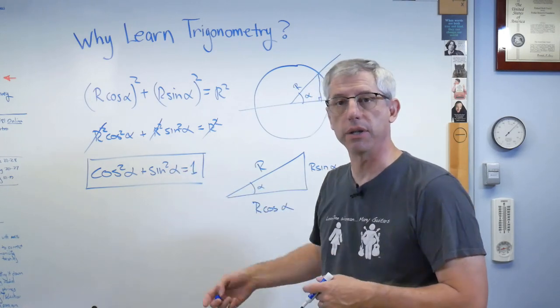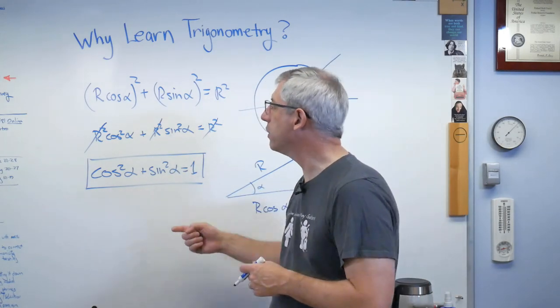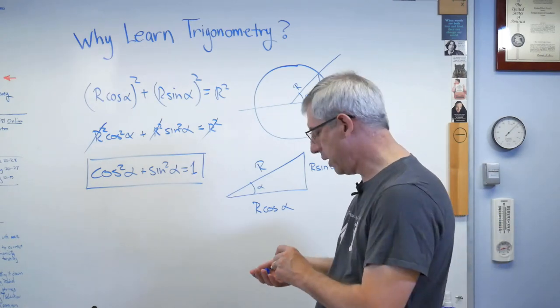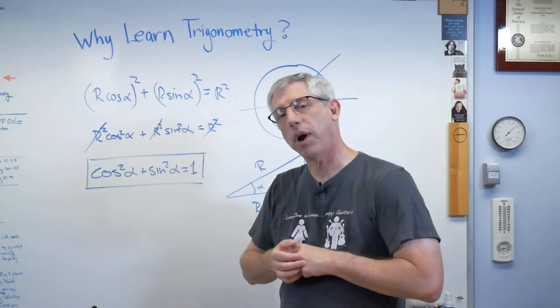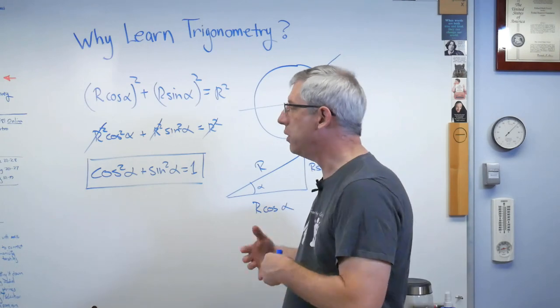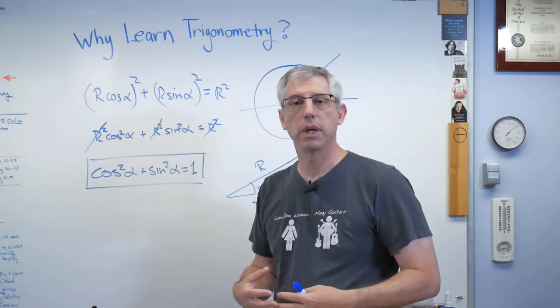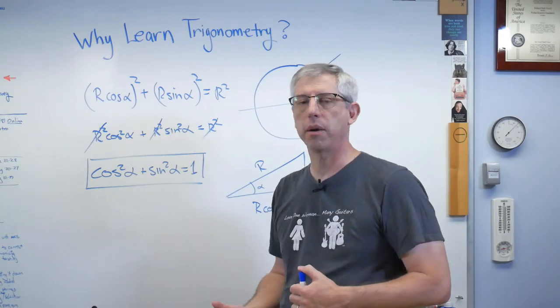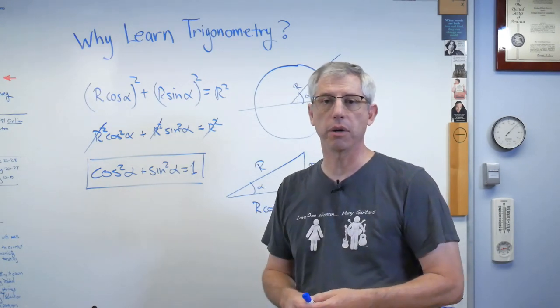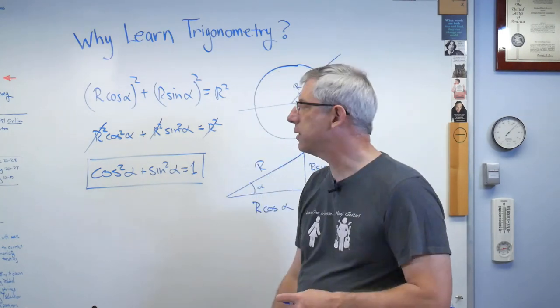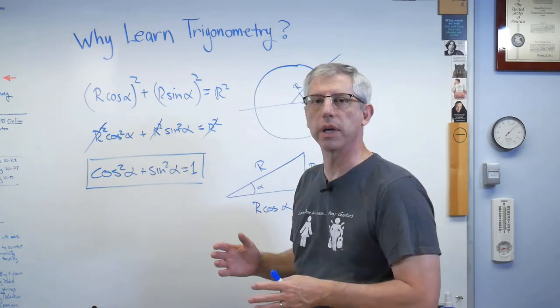And that's true for any right triangle. Now, this is one of these identities that you'll learn in class, and there are others. Having this and a few others in your sort of mathematical toolbox allows you to do all kinds of practical calculations when you're designing things. Anytime you're working with geometry, but you need numbers. So anytime you're working with a CAD program, anytime you're working with a computer-aided engineering program, orbital mechanics relies on this kind of thing. It just shows up absolutely everywhere.